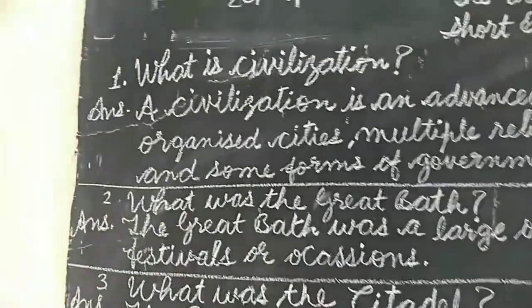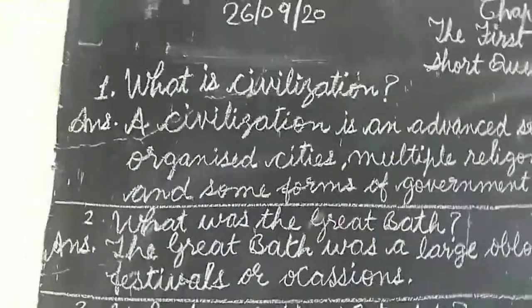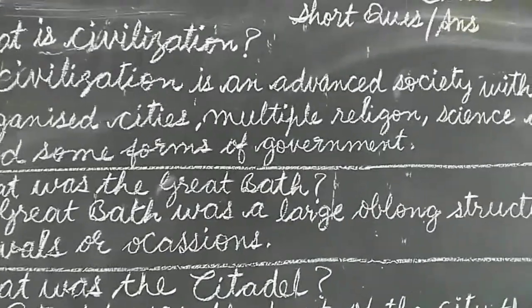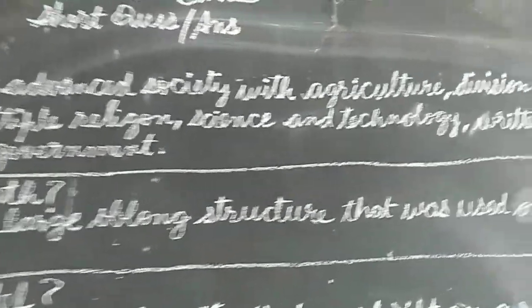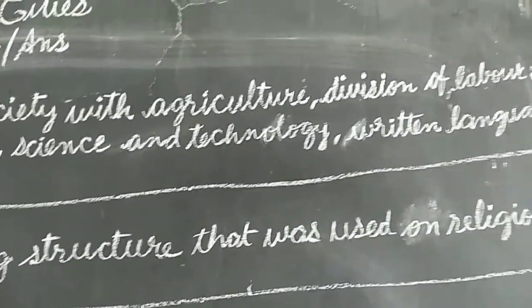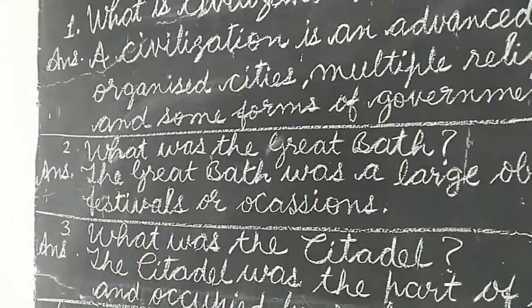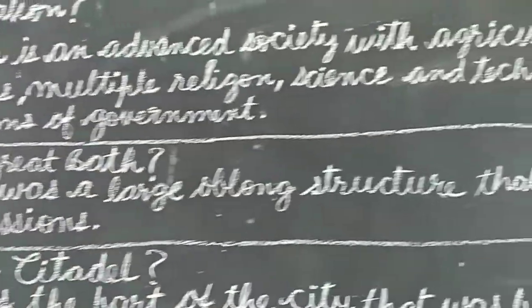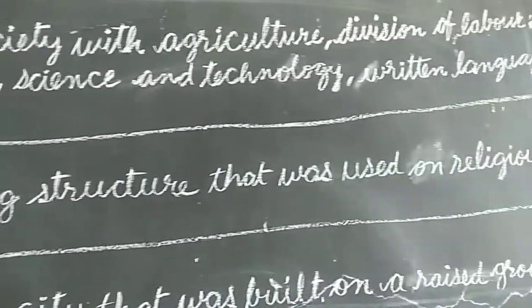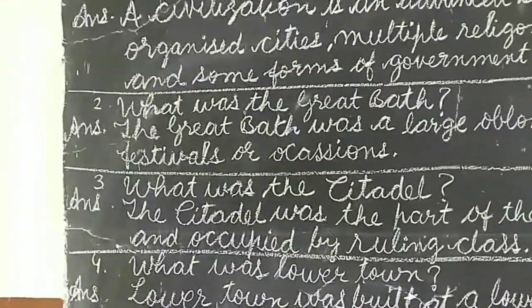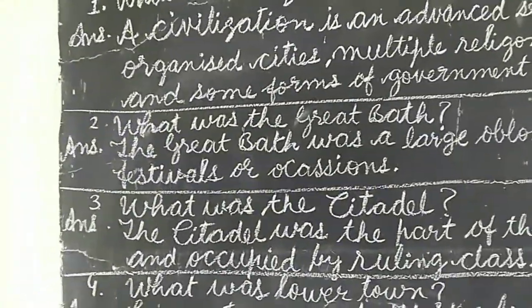First question is: what is civilization? A civilization is an advanced society with agriculture, division of labor, organized cities, multiple religions, science and technology, written language, and some forms of government.